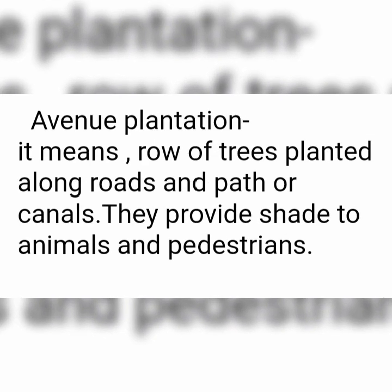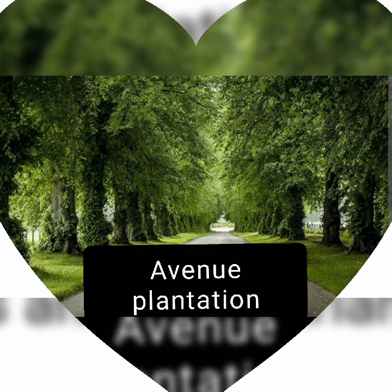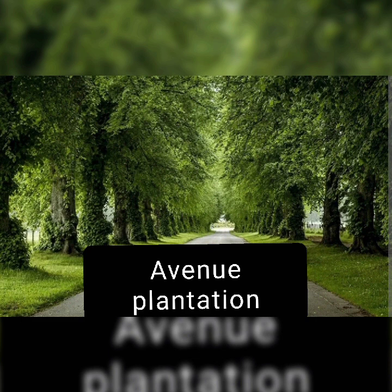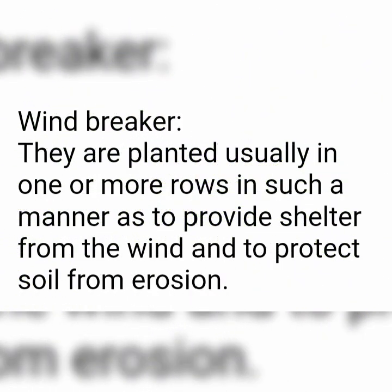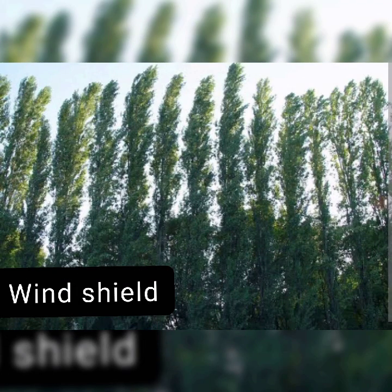The second use of trees is ornamental, showing ornamental and functional roles. The first function is avenue plantation — rows of trees planted along roads, paths, or canals. They provide shade to animals and pedestrians. Next is windbreakers, which are planted usually in one or more rows to provide shelter from the wind.